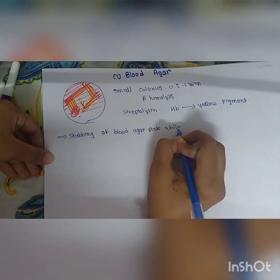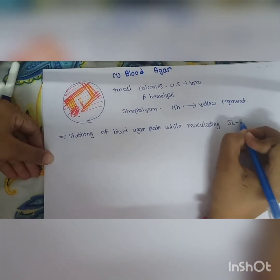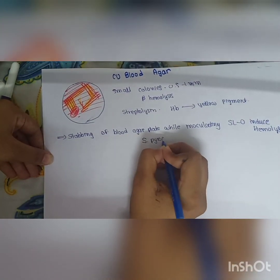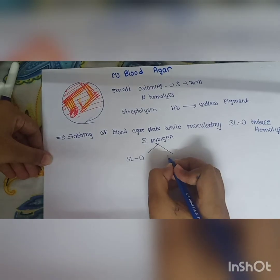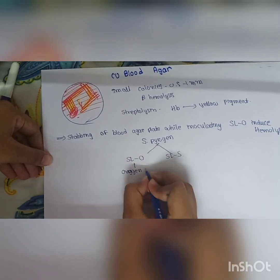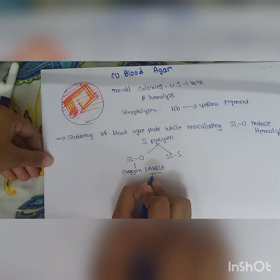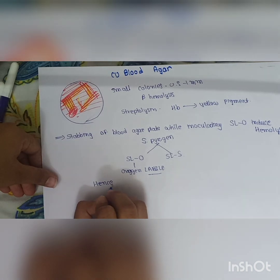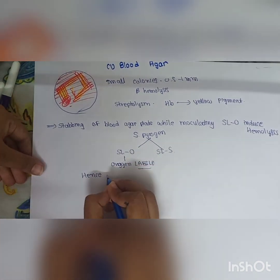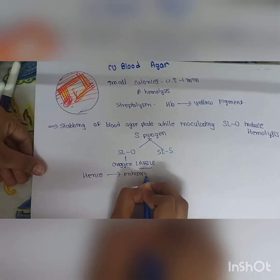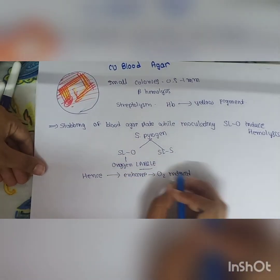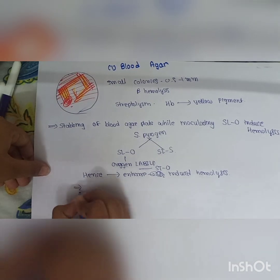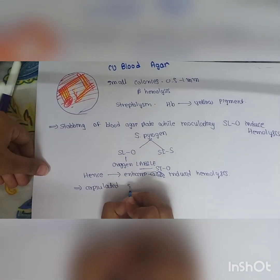When inoculating blood agar, stabbing the loop enhances SLO (streptolysin O) induced hemolysis. S. pyogenes has two hemolysins: SLO and SLS. SLO is oxygen-labile and works better in the absence of oxygen. Stabbing provides lower oxygen concentration, thus enhancing SLO-induced hemolysis. Capsulated strains of S. pyogenes produce mucoid colonies.